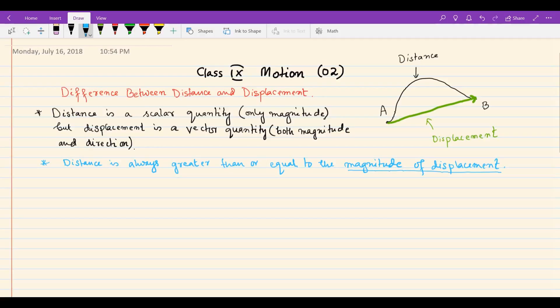Distance and displacement are different physical quantities. They cannot be compared with each other. For example, comparing the color and weight of a body - these are different quantities, so they cannot be compared.